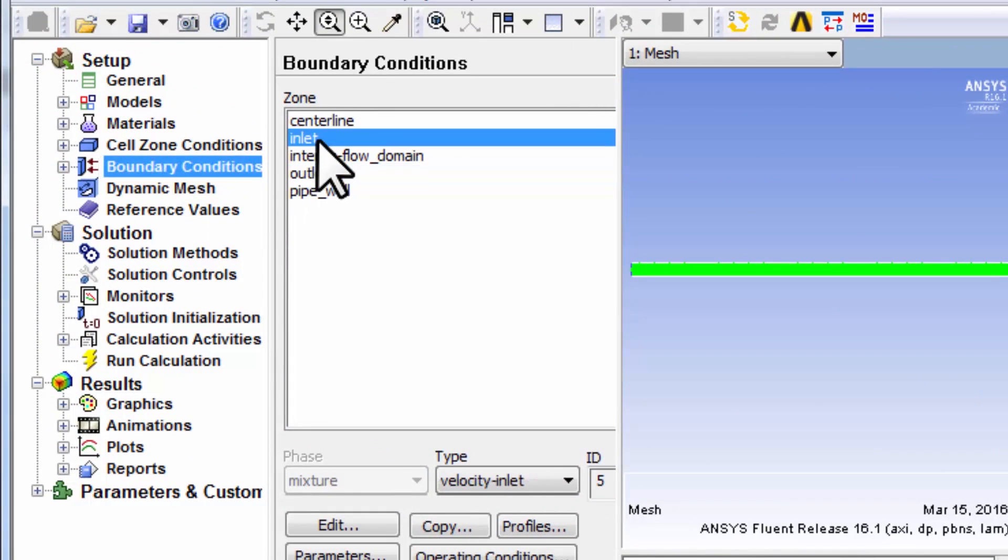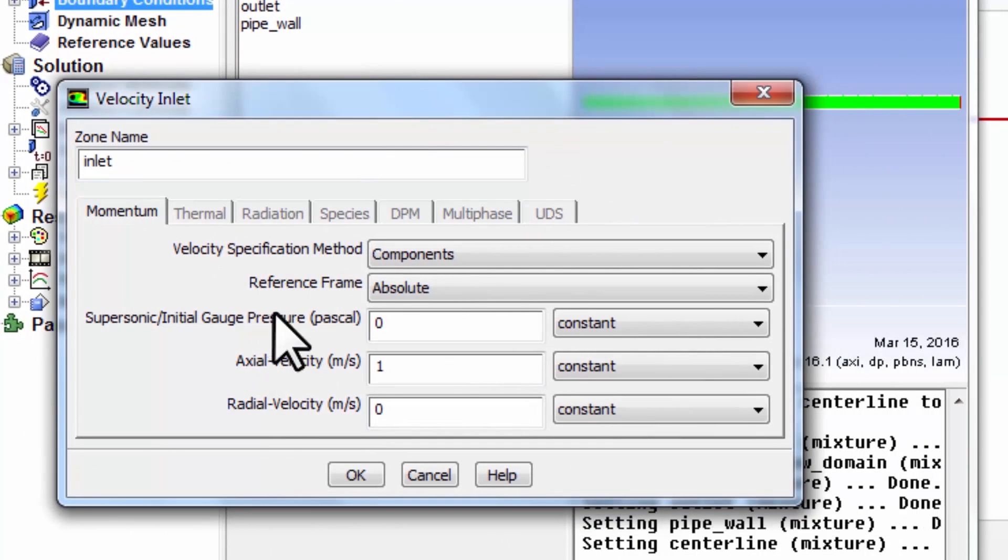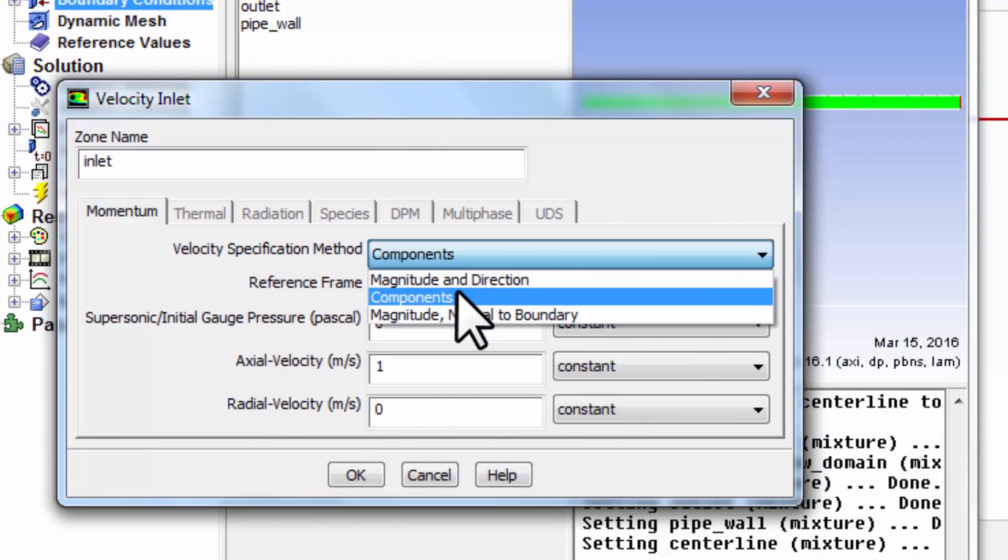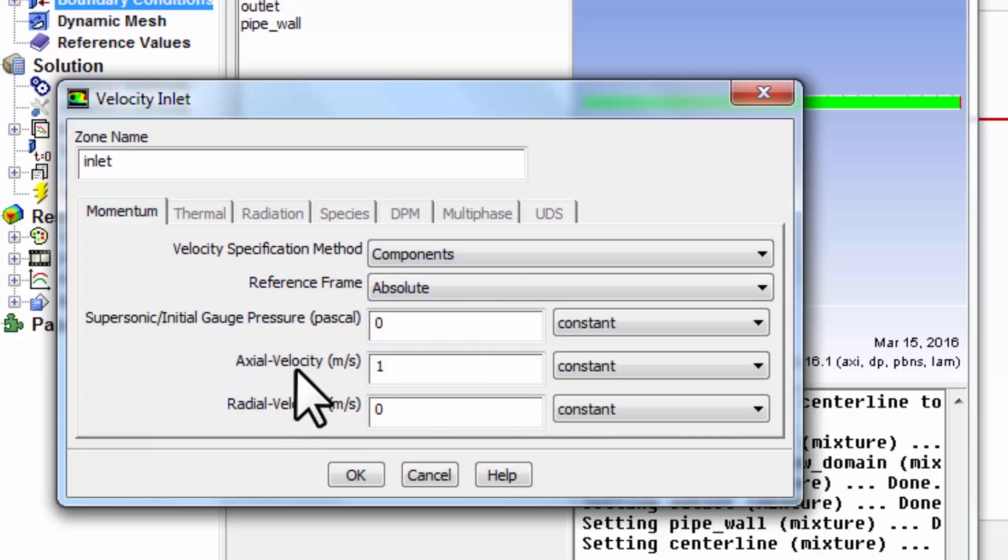Select inlet and the type is set to velocity inlet. The solver is guessing—it's saying hey, you call this the inlet so probably the flow is going to come in here and there's incompressible flow, so you probably want to set the velocity here. That's right, so I'll say edit and for velocity specification method pick components. That's not the default.